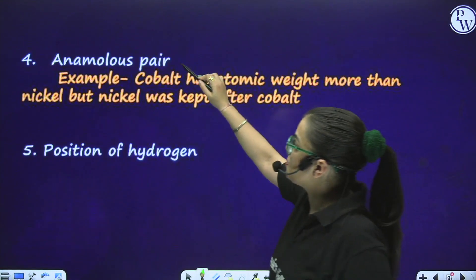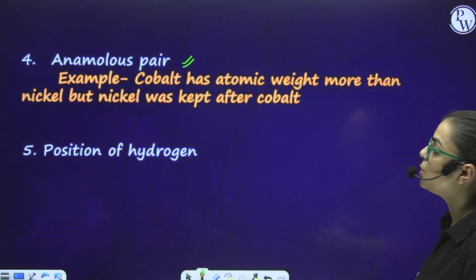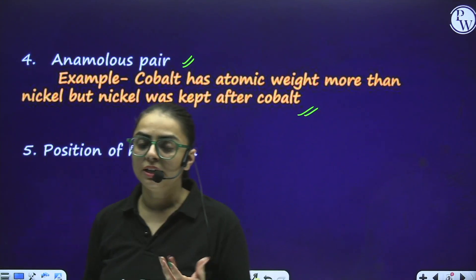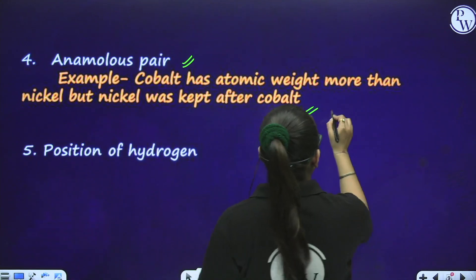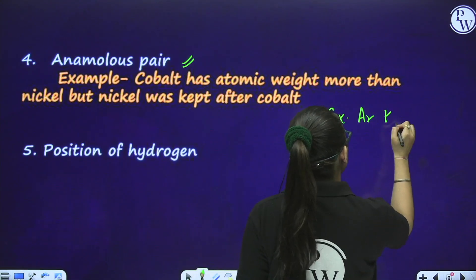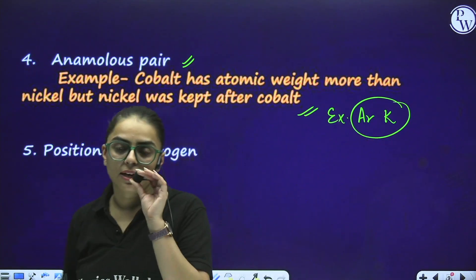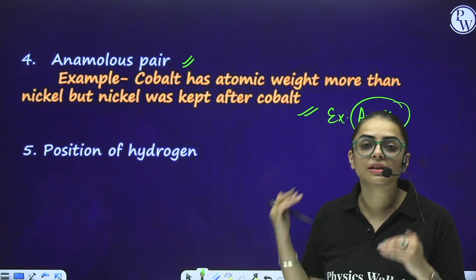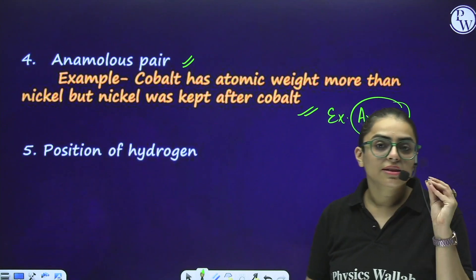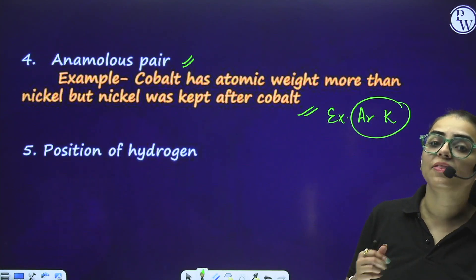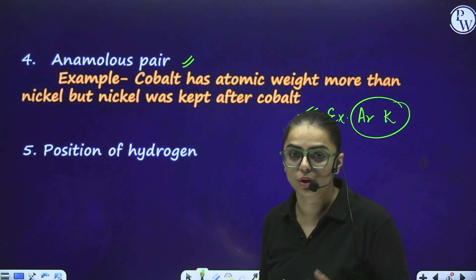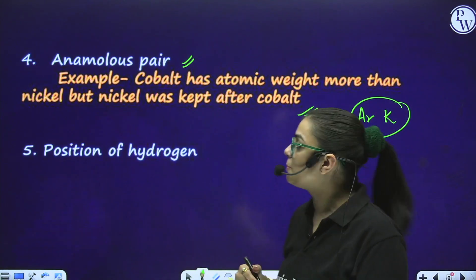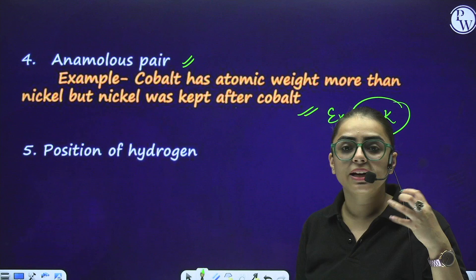The next demerit is anomalous pairs. For example, cobalt has atomic weight greater than nickel, but nickel was kept after cobalt - which was incorrect. Similarly with argon and potassium: the element with the lower atomic weight was kept later, and the element with higher atomic weight was placed before. So cobalt's atomic weight is more than nickel, meaning it should be kept after nickel, but nickel was placed after cobalt. This was a demerit.